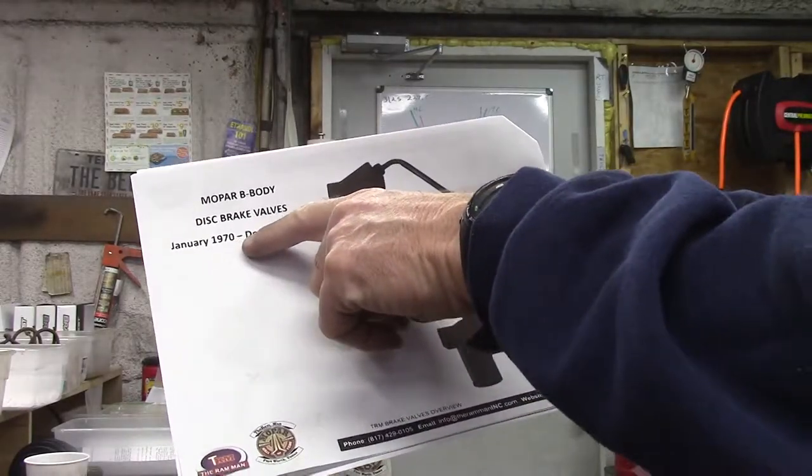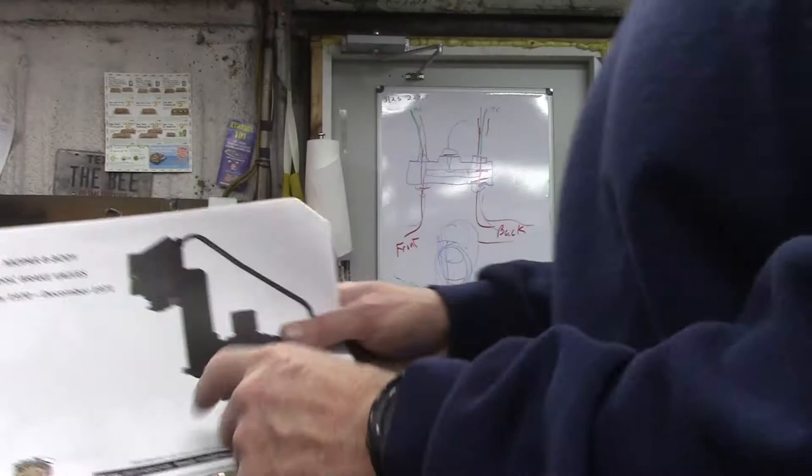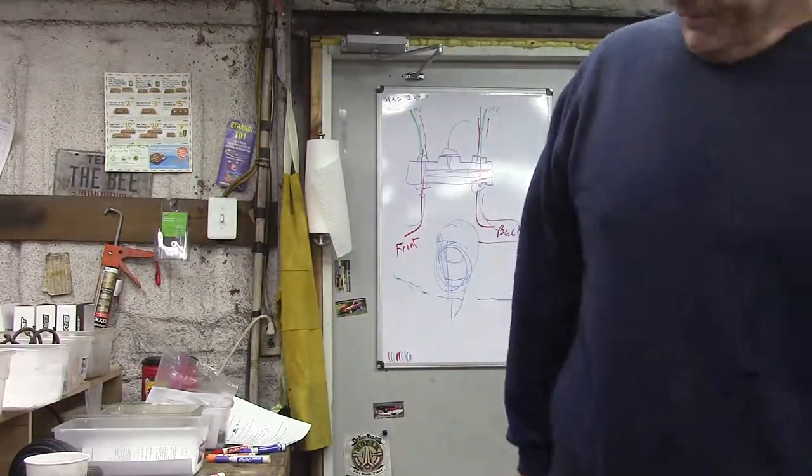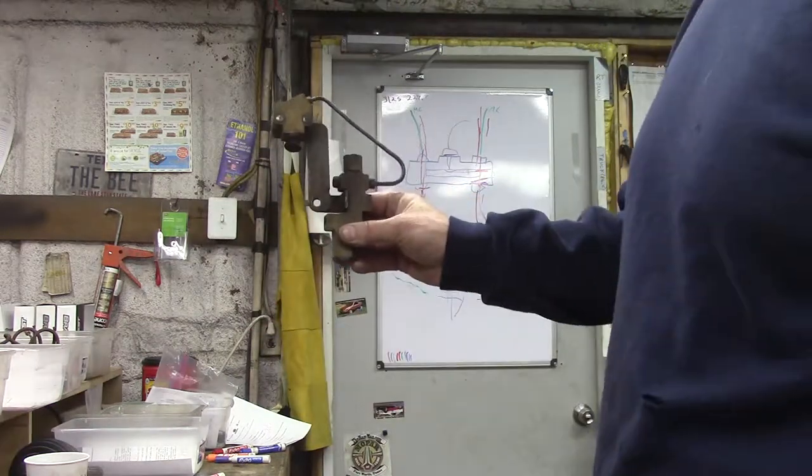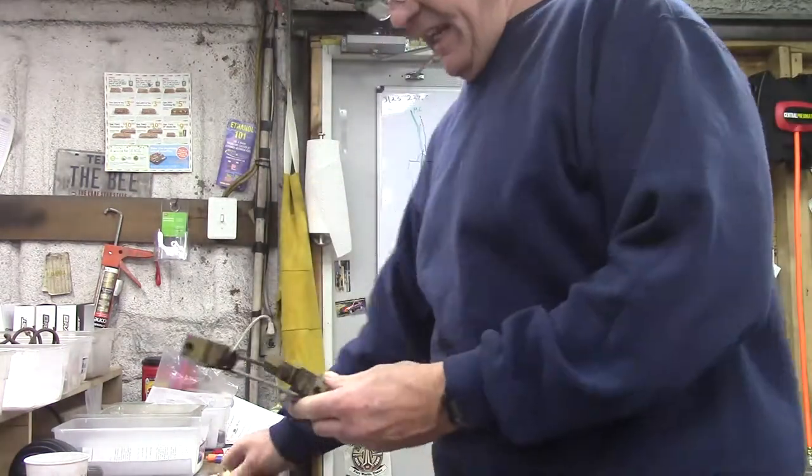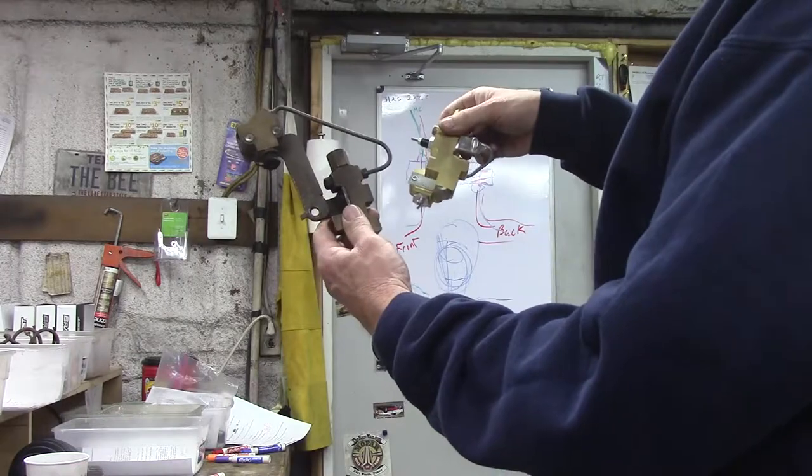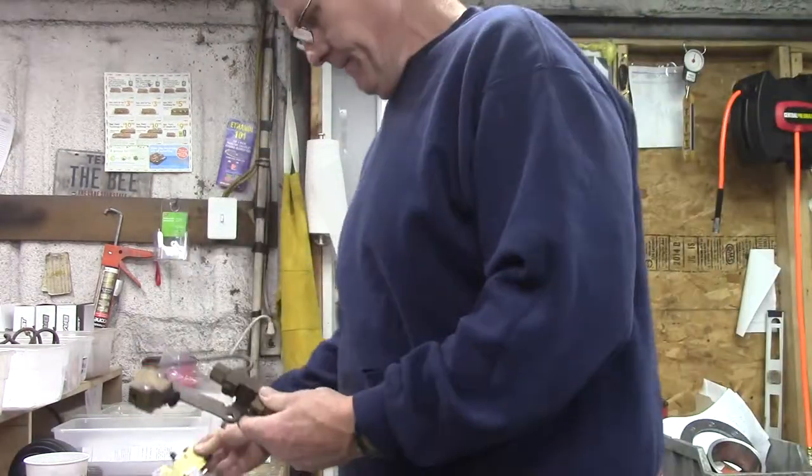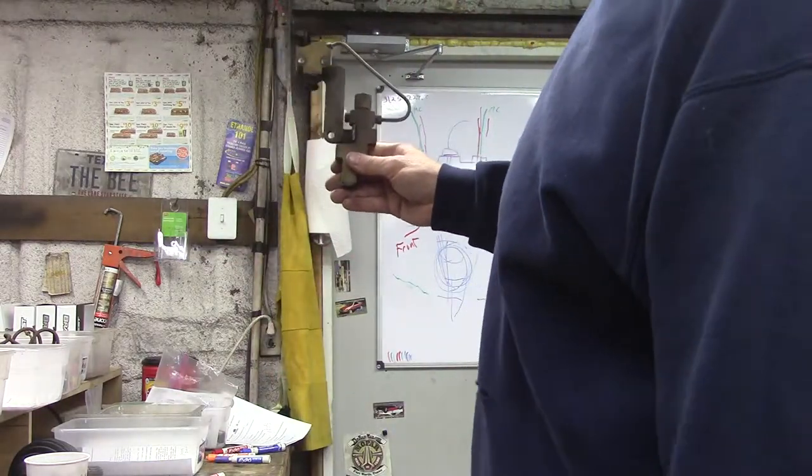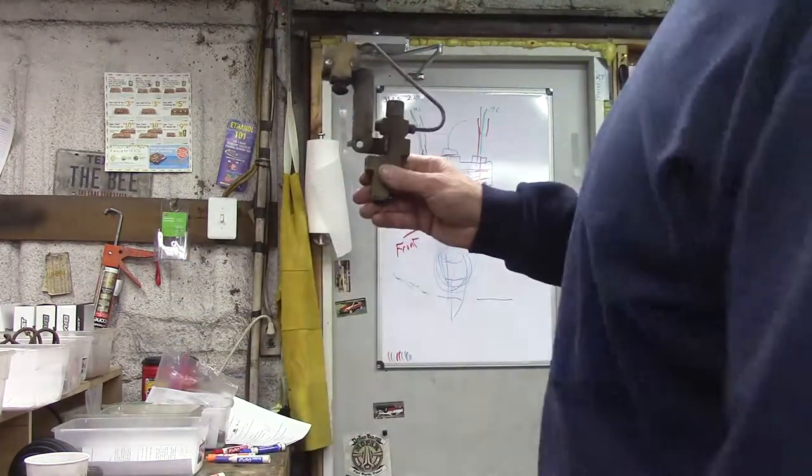January '70 through December '71, we were still staying with the brass. Right? Went to the two valve setup on the B-Body. Really trick, same thing as the E-Body. T-A valve, that's what they use. E-Body and the B-Body right here. That's the official B-Body right there.